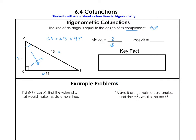Now let's find the cosine of B. We start at B and label our sides: O, A, and H. The cosine of B is adjacent over hypotenuse — that's 12 over 13. Look at that! They're equal to each other. So here's the key fact: the sine of A is equal to the cosine of B, if A and B are complements.